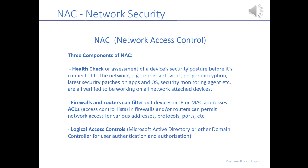So the first bullet — health check — ensures that physical devices have the right software, malware protection, and encryption. The second bullet is about filtering traffic. The third is active directory: logical access control, where you need an ID and password to get the right privileges and rights to access the parts of the system you're entitled to — the whole concept of authentication and authorization. These are the three main ingredients of network access control, or NAC.